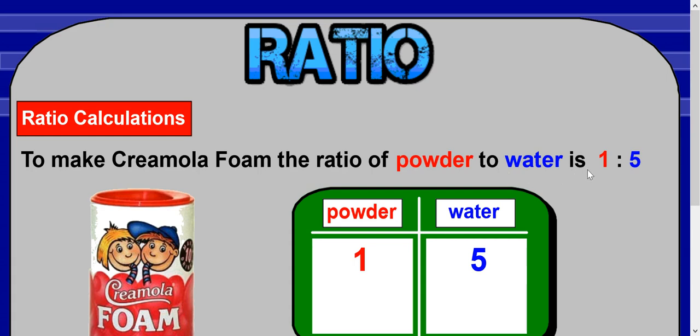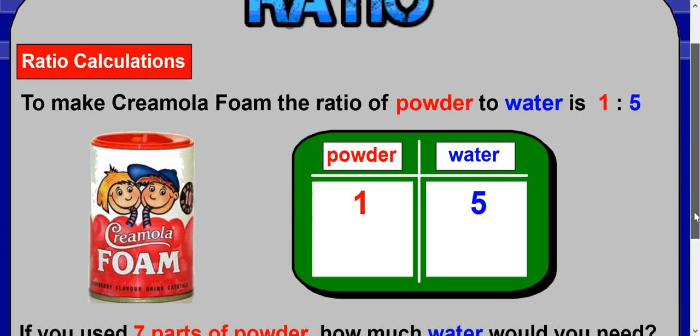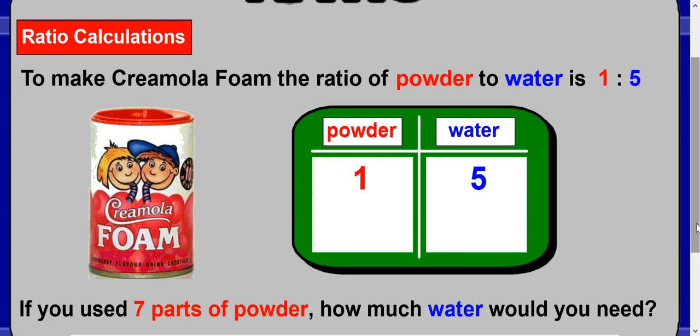To make Creamola Foam, the ratio of powder to water is 1:5. The question is: if you use 7 parts powder, how much water would you need? You don't want it too powdery and too strong.